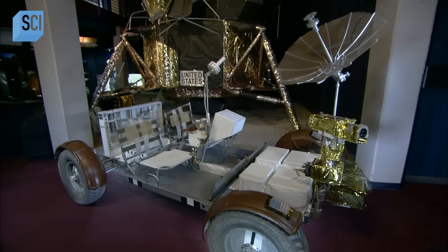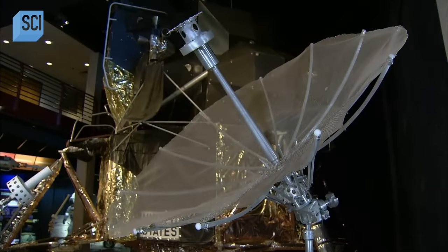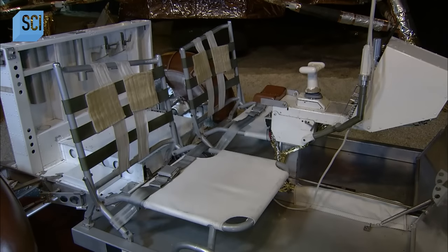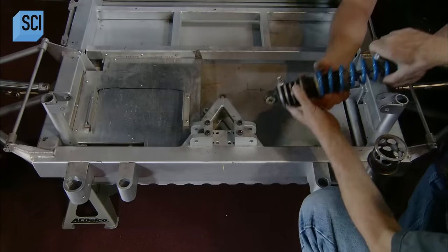The Lunar Rover was no ordinary four-wheeler. Millions of dollars of research went into this one-horsepower wonder, which became known as the Moon Buggy.